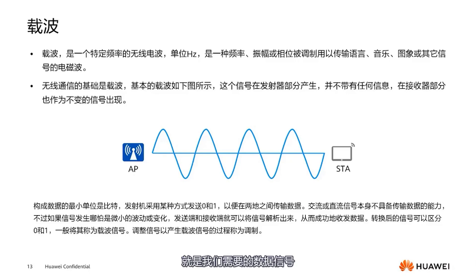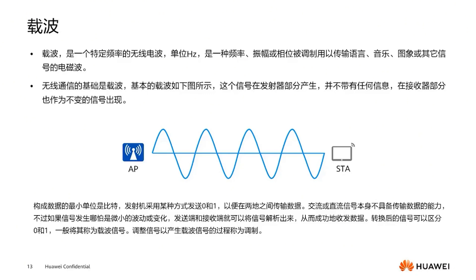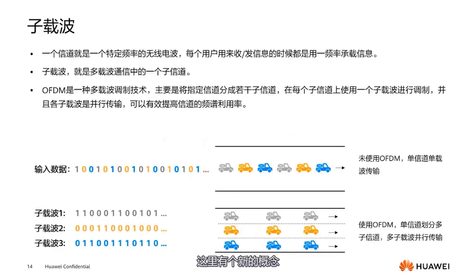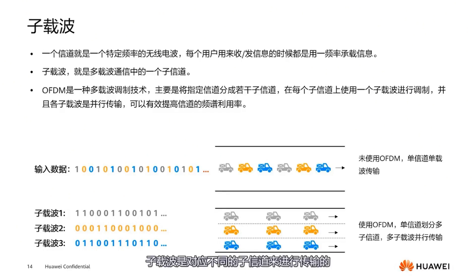We've talked about using electromagnetic waves to transmit data. This electromagnetic wave is actually the carrier — we've made finer divisions of the carrier. Here's a new concept called the subcarrier. Subcarriers correspond to different subchannels for transmission.